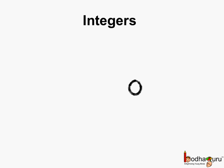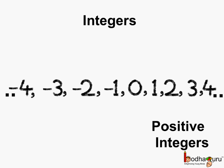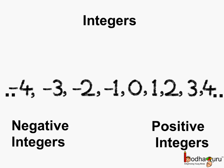The whole number that is 0, including the natural numbers such as 1, 2, 3, 4 and so on, and also the negative integers such as minus 1, minus 2, minus 3, minus 4 and so on, constitute the integers. So, an integer is a collection of 0, the positive integers, and the negative integers.